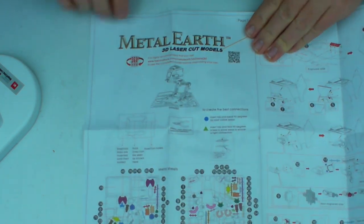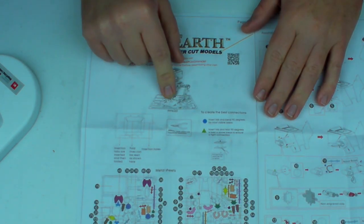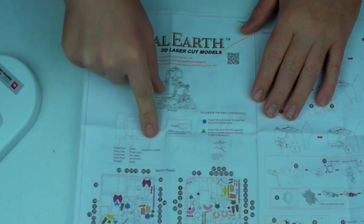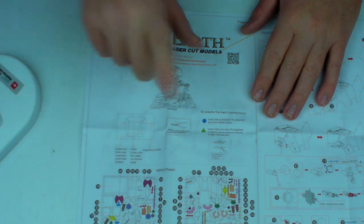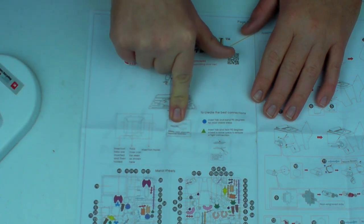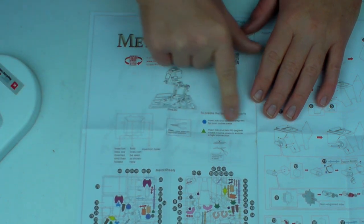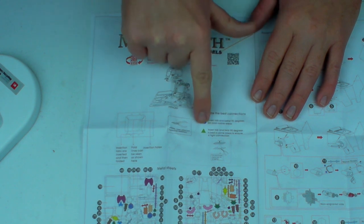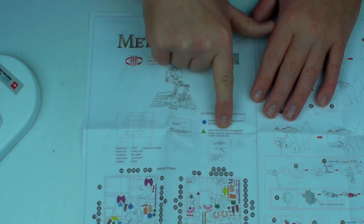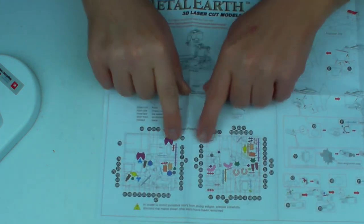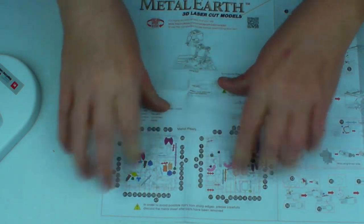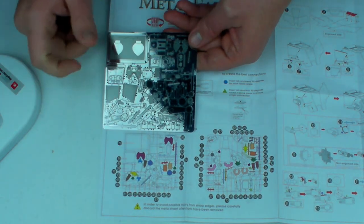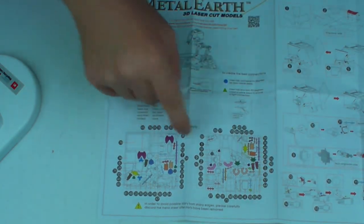Page one of the instructions as usual has a drawing of the kit. A bit about insertion tabs and insertion holes and tabs and folds. A bit about the needle nose pliers being helpful, they certainly are. The key circle means to bend tabs over 90 degrees. Triangle means to twist them 90 degrees. And down here you have the outline or the layout of the metal sheets, so you know which part is which.